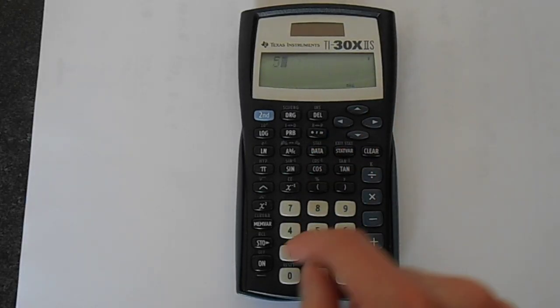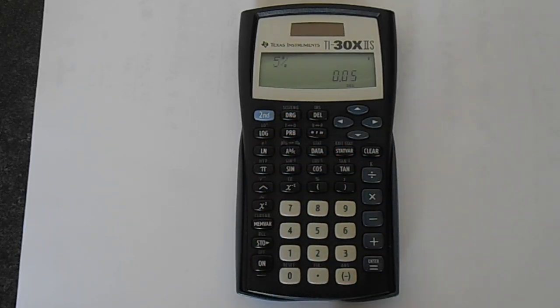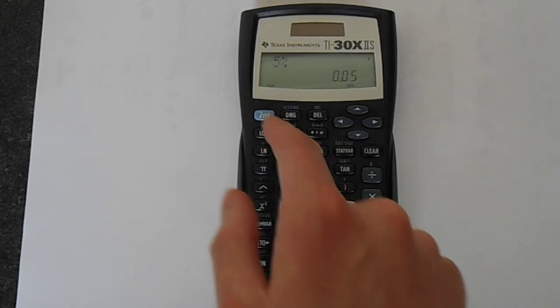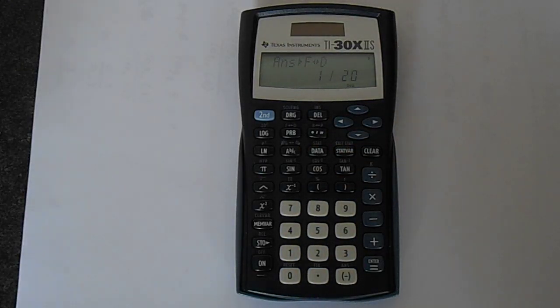If you're fantastically lazy you could even do five, second function, percent, equals, and then go second function fraction to decimal, enter, and that will tell you that five percent is one twentieth.